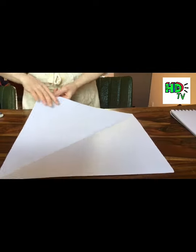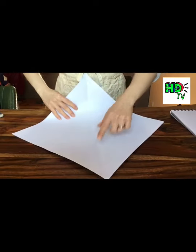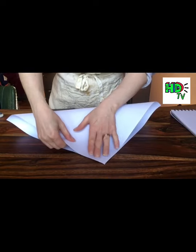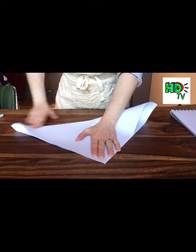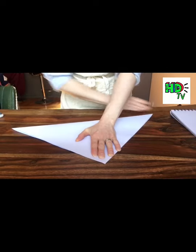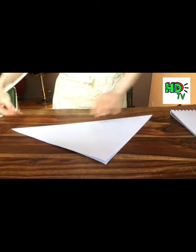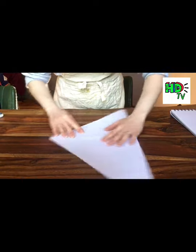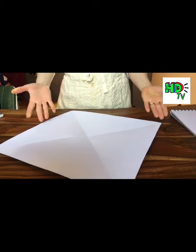Once you have cut this edge you then want to fold it in half again and create another set of triangles just to check that this is a nice and even square. All of the edges should meet up. And when you unfold it you should now have almost like a diamond just like this one.